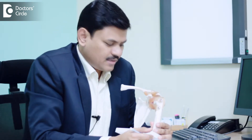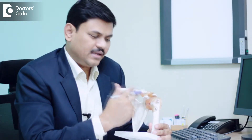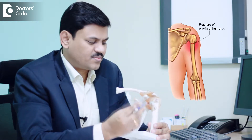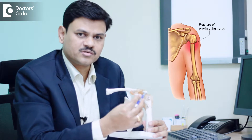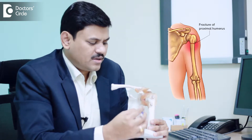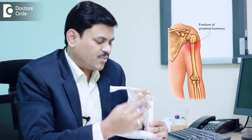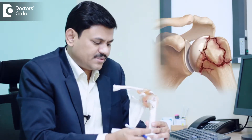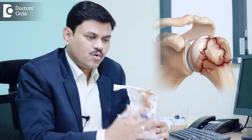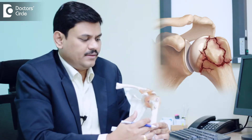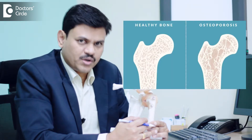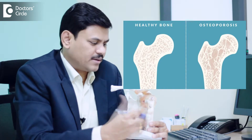The fracture can happen with any of these bones. The most common fracture around the shoulder joint is fracture of the proximal humerus. It can be broken into a single piece or it can be broken into multiple pieces. It is more common in patients who are aged and the bone is more porotic or the bone becomes weak.